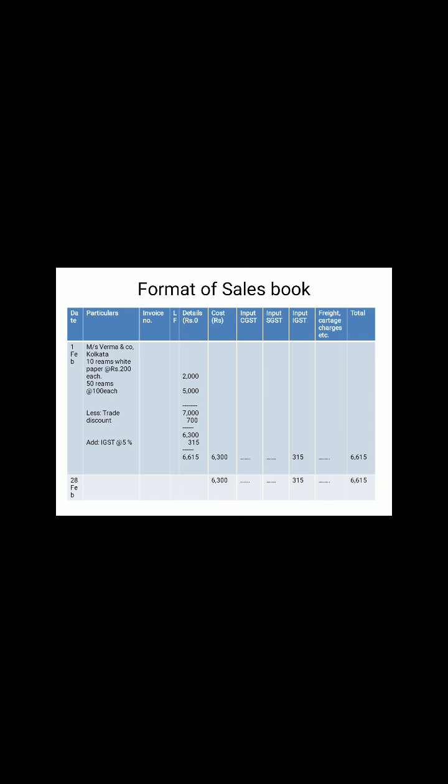For example, 10 rims of white paper at 200 each gives 2000, and 50 rims at 100 gives 5000. The total of both is 7000. If a trade discount of 10% is applied on the total amount of goods sold, then after deducting, the net amount becomes 6300. This net price of 6300 is the sale made to the customer after deduction.